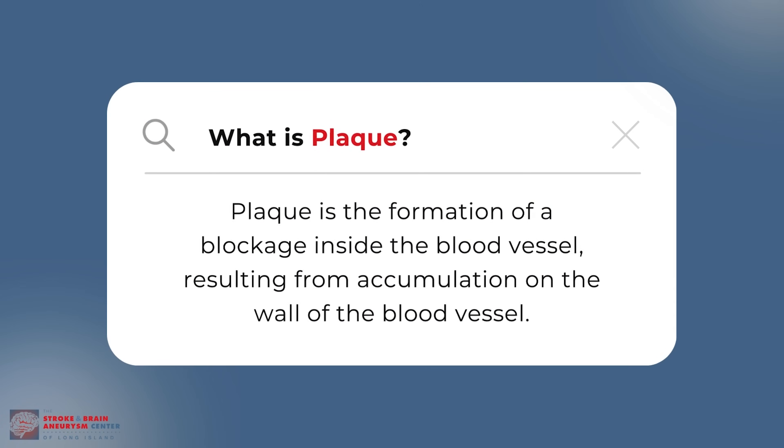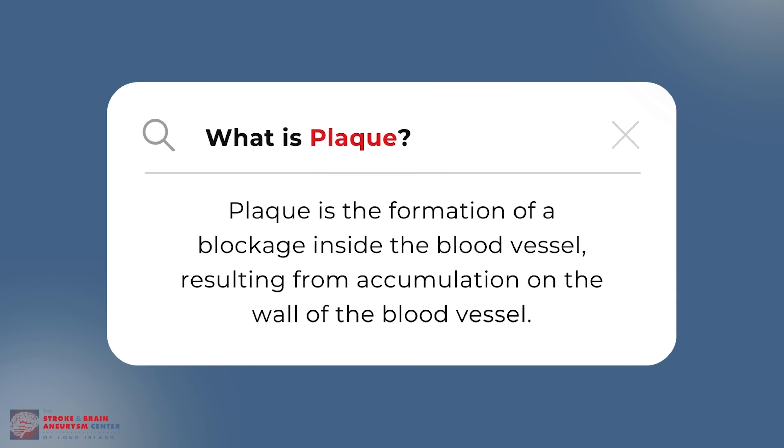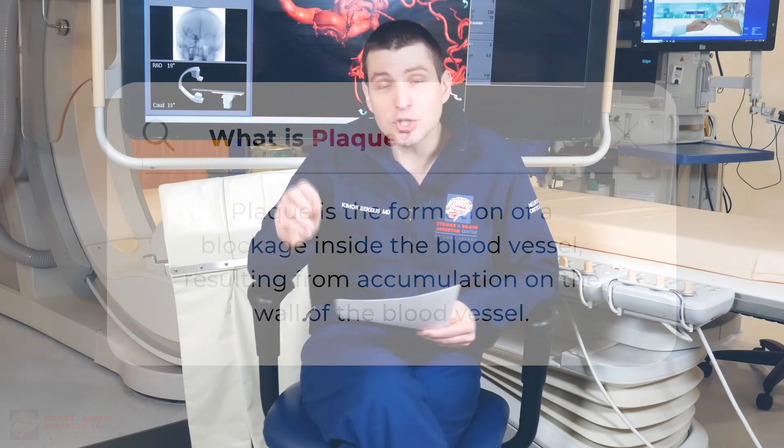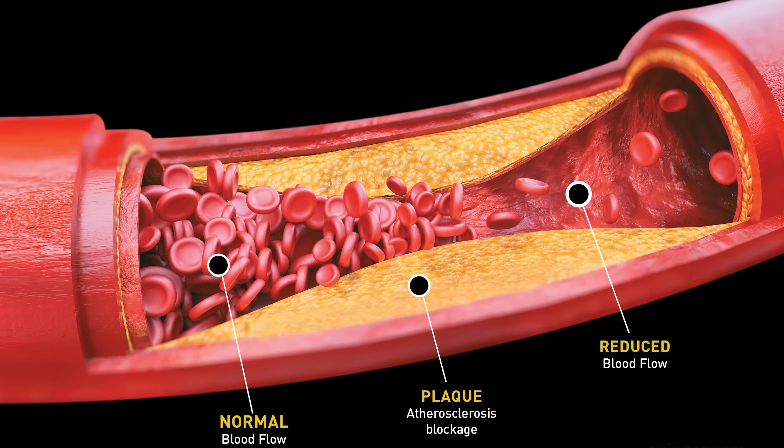In the setting of stroke and atherosclerosis, a common question is: what is plaque? We often refer to plaque in the carotid arteries or brain blood vessels. Plaque is a blockage that forms inside the blood vessel — an accumulation of cholesterol, calcium, and other deposits on the vessel wall, making it narrower. The biggest concern is that plaque can change abruptly, becoming friable and sending pieces into the brain, causing a substantial blockage and stroke.